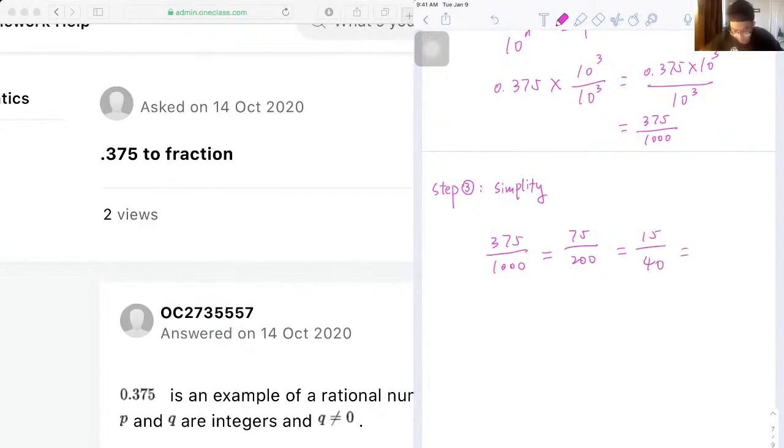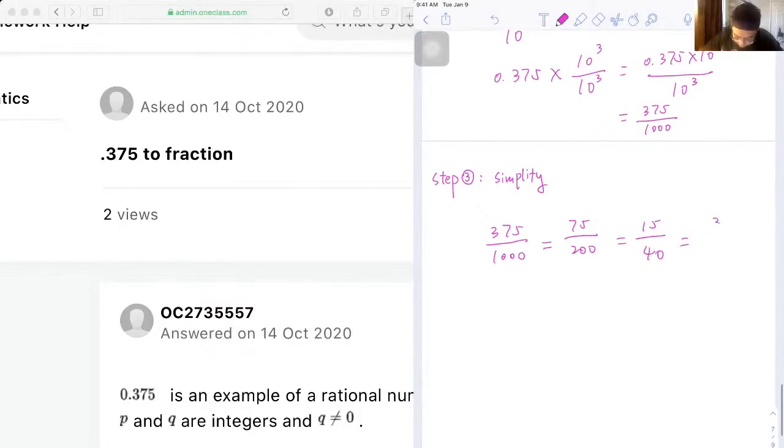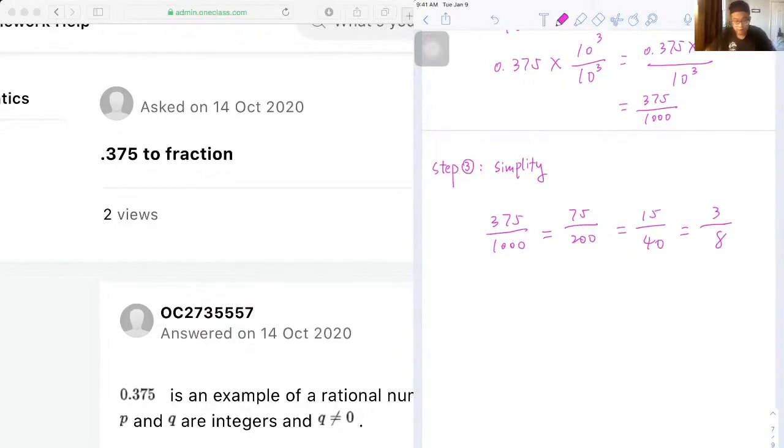Okay, yeah, and the same thing again. 15 divided by 5 is 3, and 40 divided by 5 is 8. And now you can see that 3 and 8 doesn't have any common factor, so that will be our final answer.